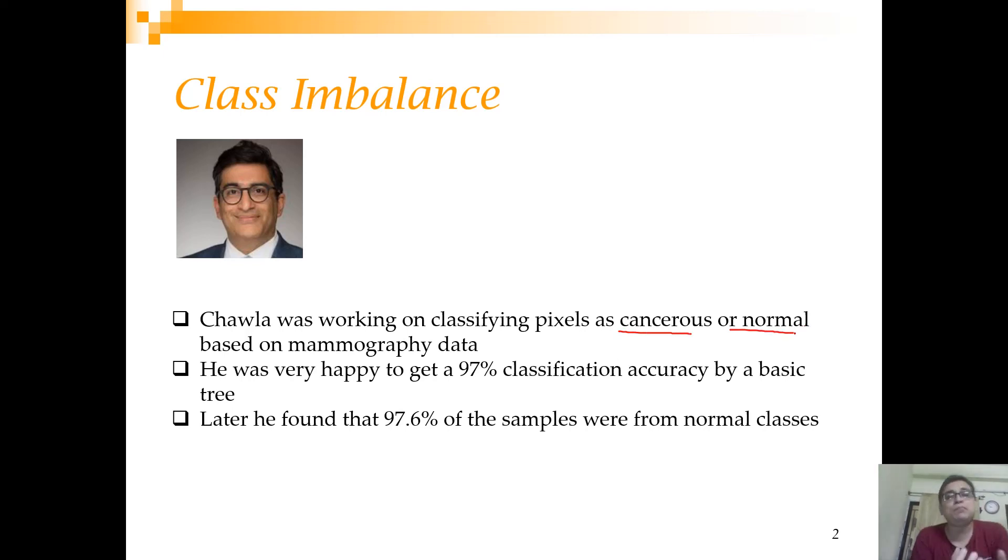He built a very simple basic decision tree based classifier and got a classification accuracy of 97%. Evidently he was very happy. But when he looked at the data more closely, he found that 97.6% of the data were actually normal data. So he was no longer happy.